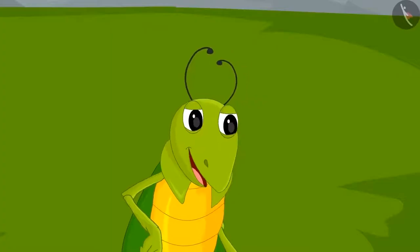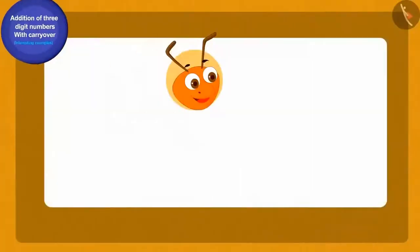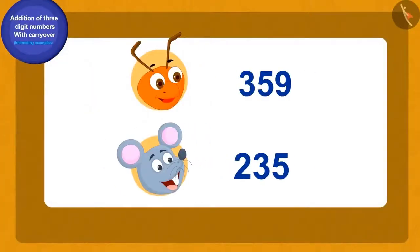The next day, the grasshopper saw more ants and rats in the herd. Now, there were 359 ants and 235 rats. Let us now see the total number of animals.